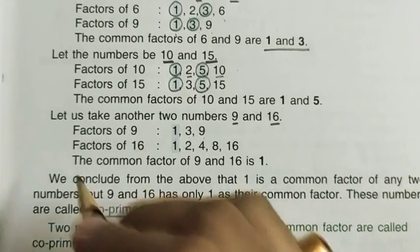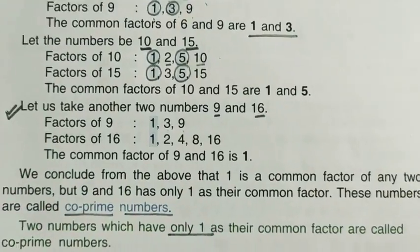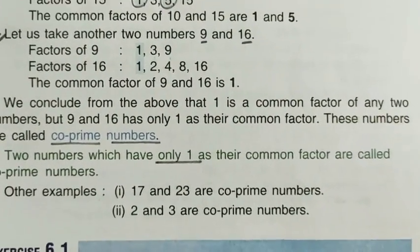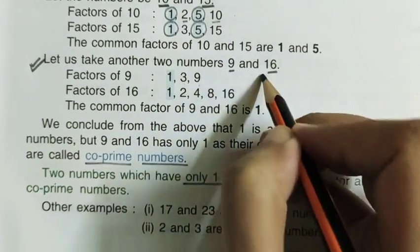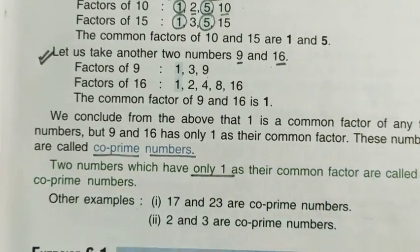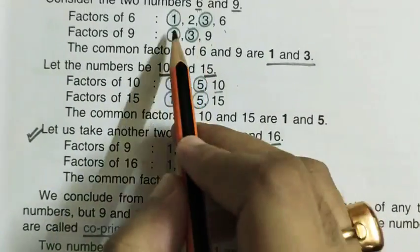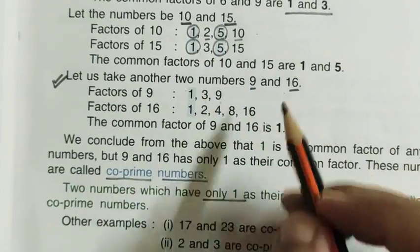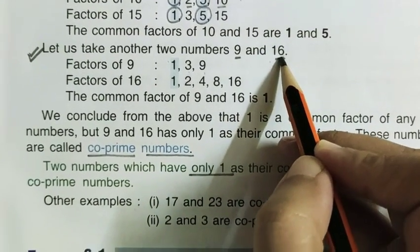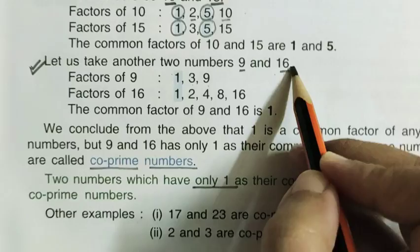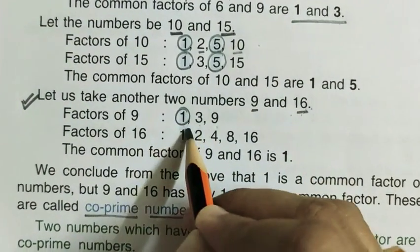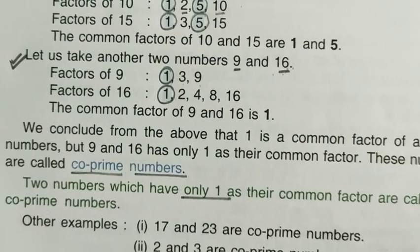Now come to another example. Here we have 9 and 16. So look at here — there is only one common factor.